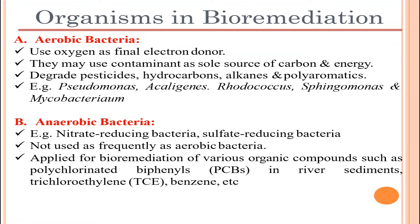Organisms in bioremediation can be of aerobic and anaerobic types. These are two important types prevalent in every bioremediation process, with both aerobic and anaerobic bacteria playing roles. Aerobic bacteria use oxygen as the final electron acceptor, while anaerobic bacteria work under hypoxic conditions — low or no oxygen.